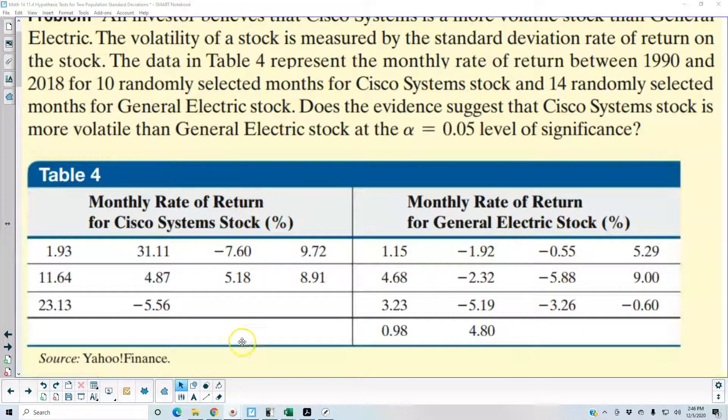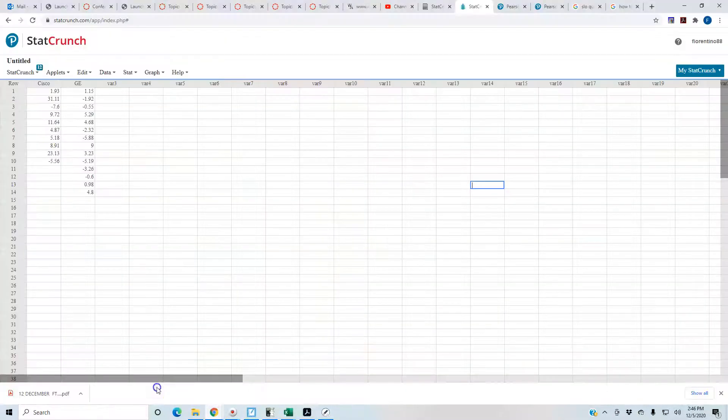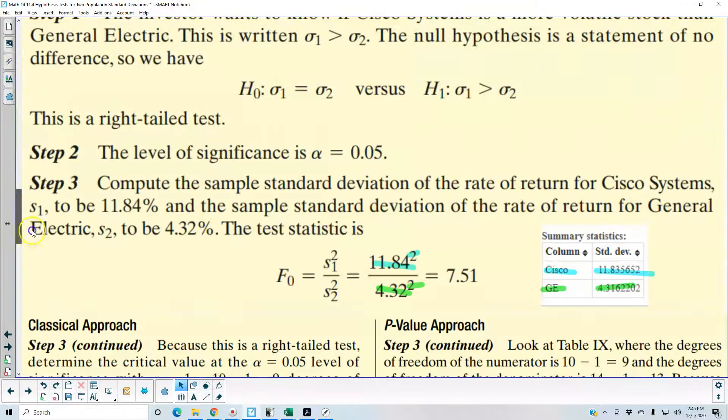We're going to enter those values into StatCrunch. We have a column for Cisco, there's our numbers, column for GE, and then let's go back to the instructions of how they want us to perform this.